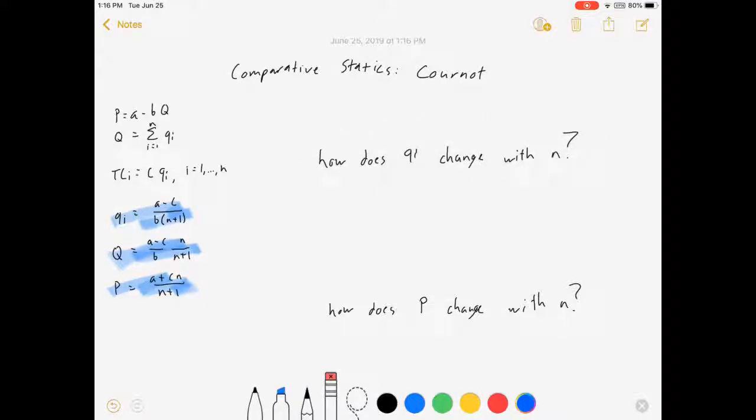I'm going to say derivative of QI with respect to N, and that is going to be equal to minus (A minus C) over B over (1 plus N) squared.